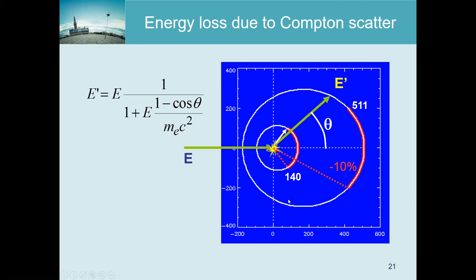For technetium the distribution is more spherical, and the less energy the photon has, the more circular it becomes - less energy is transferred to the electron for the same deflection angle. PET and gamma cameras typically have an energy resolution of about 10%, so if we reject photons that have lost more than 10% of their energy, there are still pretty large deflection angles possible for photons to still be detected.